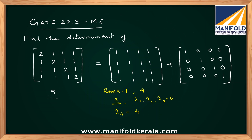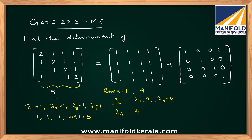The eigenvalues of the all-ones matrix are 0, 0, 0, and 4. Now, since we are adding the identity matrix to this, applying the fourth property, the eigenvalues of this particular matrix become lambda 1 plus 1, lambda 2 plus 1, lambda 3 plus 1, and lambda 4 plus 1 — that is, 0 plus 1 equals 1, again 1, again 1, and 4 plus 1 equals 5. So the new eigenvalues of this matrix are 1, 1, 1, and 5.